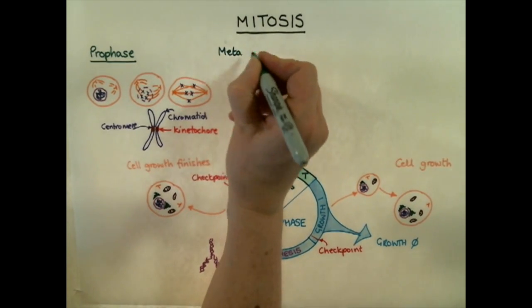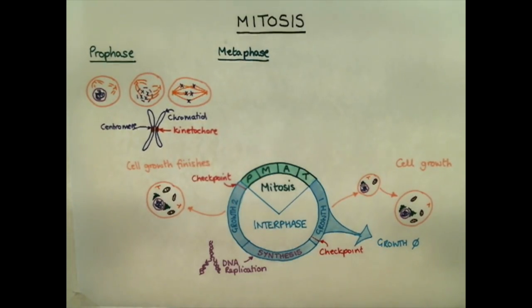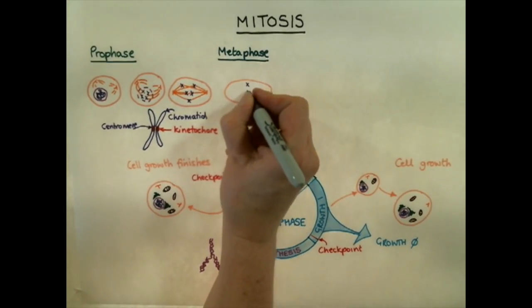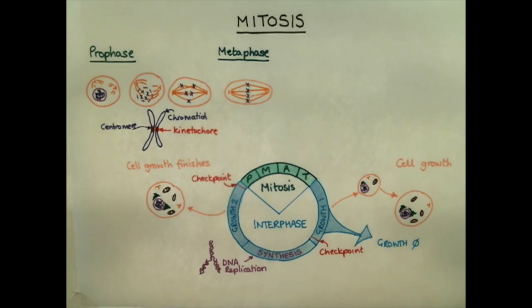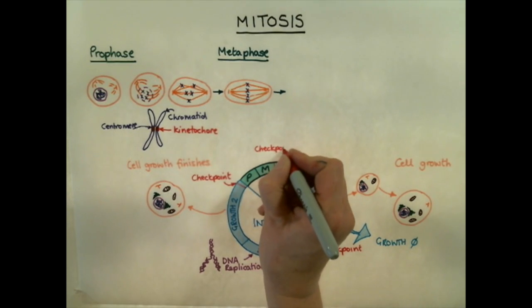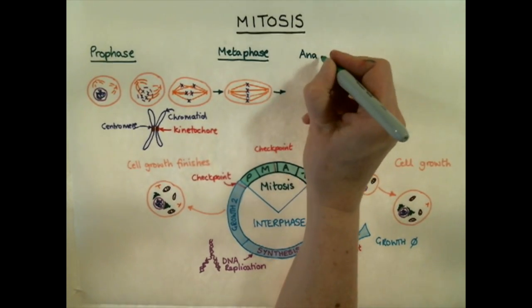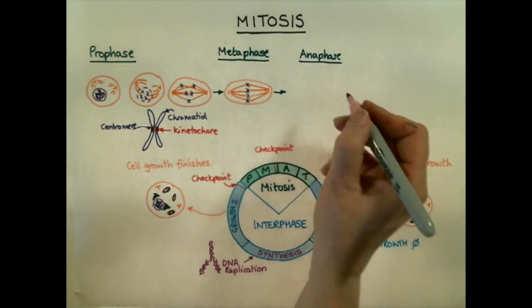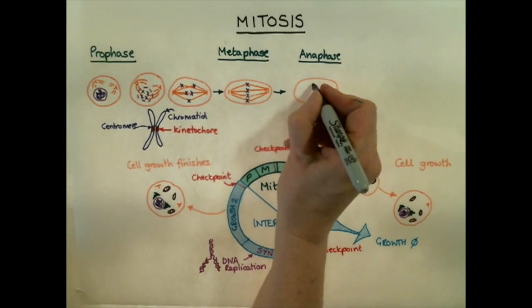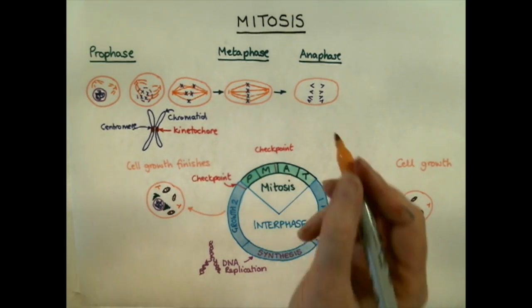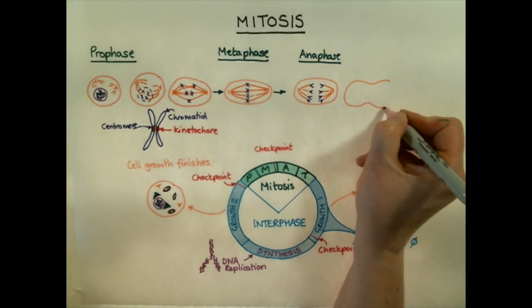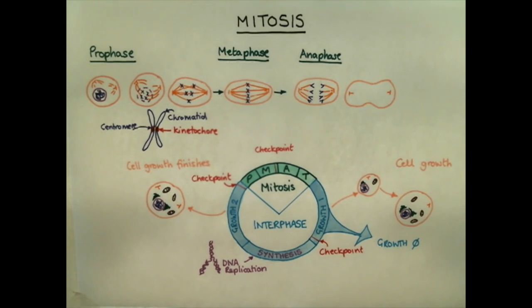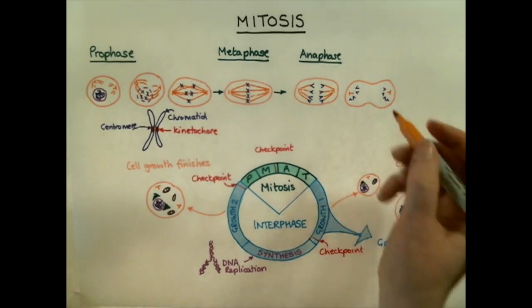In metaphase, the microtubules of the mitotic spindle align the chromatids in the exact centre of the mitotic spindle, in a place called the metaphase plate. A final checkpoint must now be passed — a check to ensure all chromatids are in the correct position — before the chromatids are finally split apart. Once all the chromatids are correctly positioned, the cell enters anaphase. The centromeres of the chromatids split, and each chromosome is pulled by a microtubule towards the pole of the cell where the centrosome is positioned. Under a microscope, the chromosomes appear V-shaped, as the centromeres pull the trailing arms of the chromosomes towards the pole.